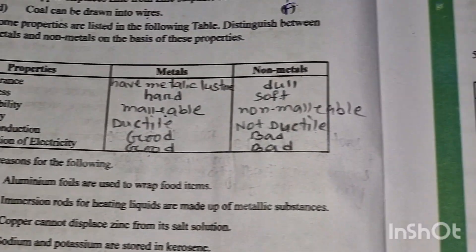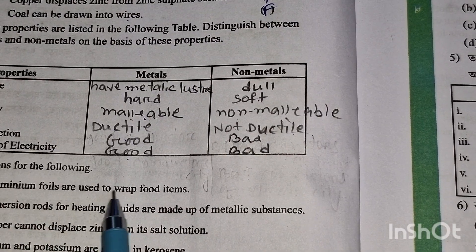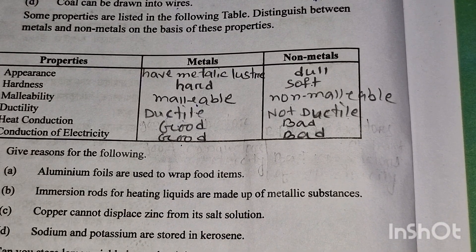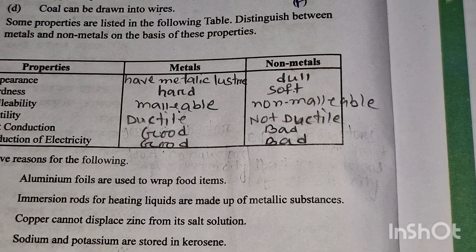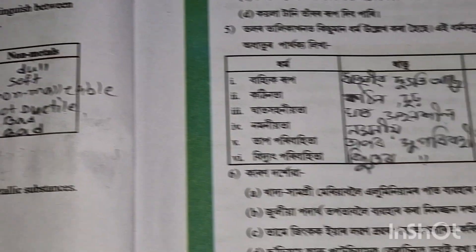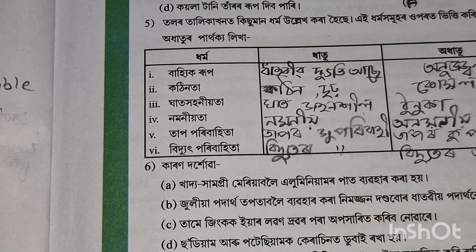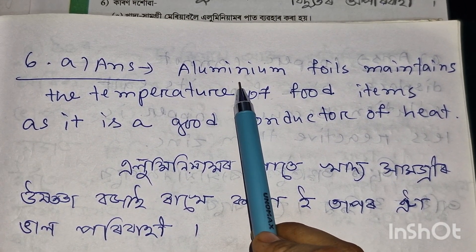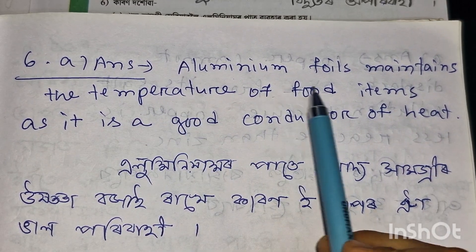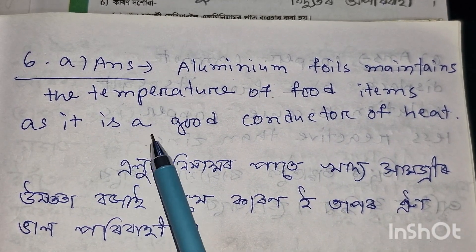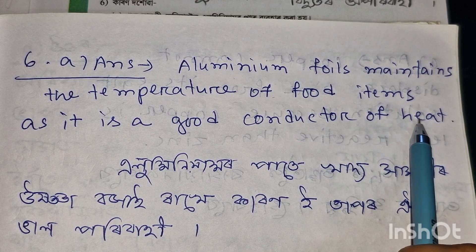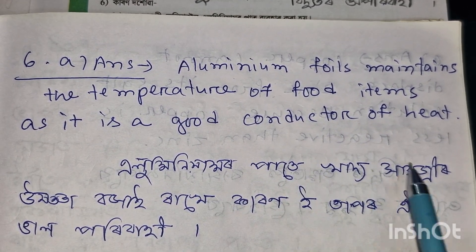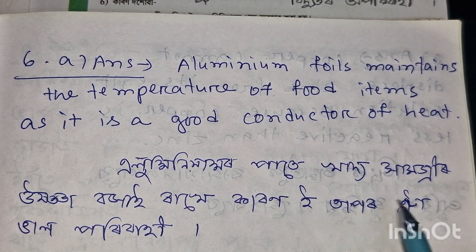Question number 6: Aluminum foils are used to wrap food. This is because aluminum is a good conductor of heat, and it is not reactive, so the food stays nice and fresh.